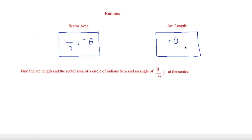The question says: find the arc length and sector area of a circle with radius 6 centimetres and an angle of three-quarters π at the centre. When we see radians expressed in terms of π, that tells us it is in radians even if the question doesn't say so explicitly.